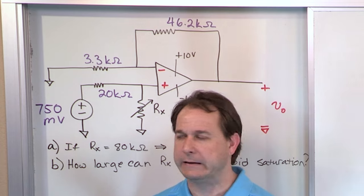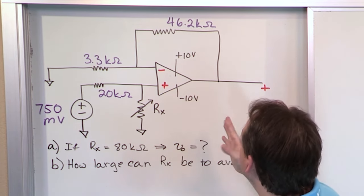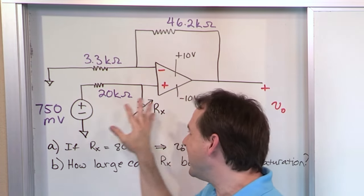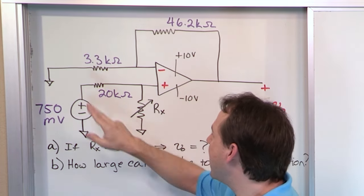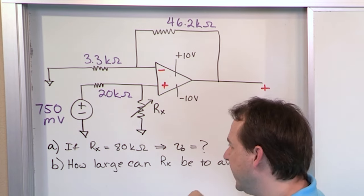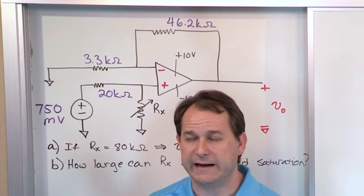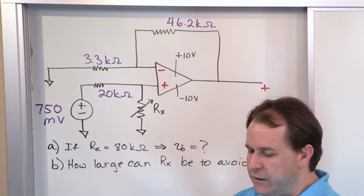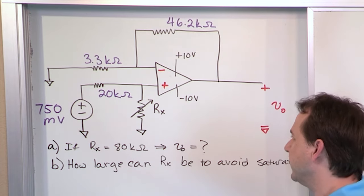Don't make a stupid mistake. The most important thing is to realize that you can find the gain of this amplifier without looking at anything down in the input network. The value of the adjustable resistor doesn't matter for the gain. The value of the series resistor doesn't matter for the gain. The input voltage certainly doesn't matter for the gain. It's all defined by the feedback and ground resistors up here. So the gain we can calculate, and we will.